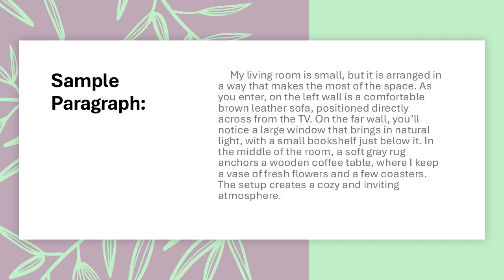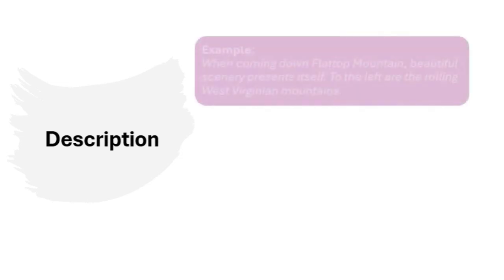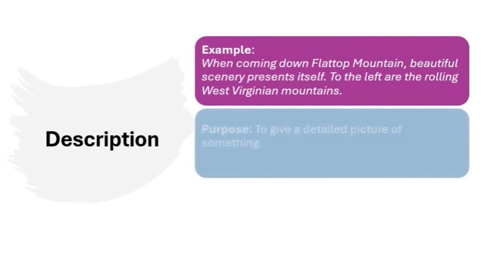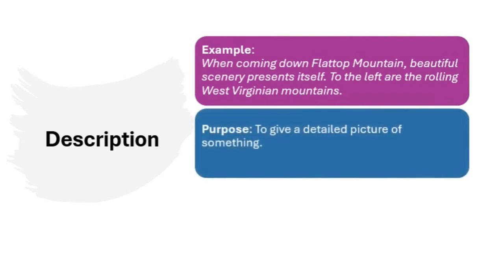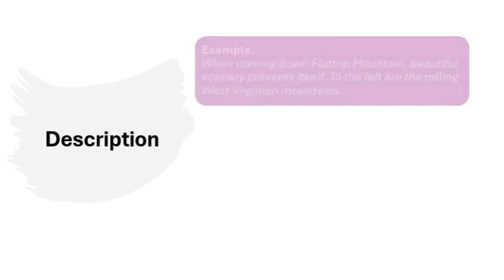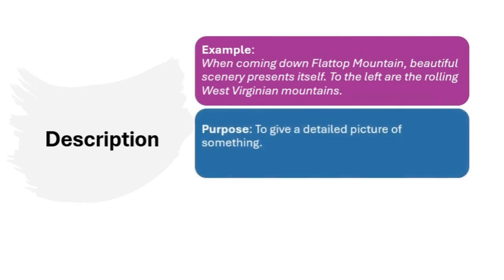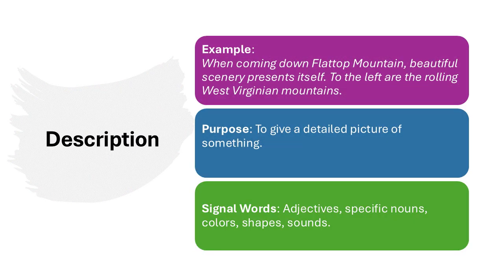This spatial organization helps create a clear and vivid mental image of the living room. Next is description — this is where you paint a picture with words. You're using vivid details to help the reader imagine the scene. Think of it as taking them on a visual journey, using adjectives and specific nouns to bring the scene to life. For example, describing a hike up Flat Top Mountain could involve the colors, shapes, and sounds of the landscape. Words like rolling hills, majestic, and vibrant blue give readers sensory experiences that help them visualize what you're describing.